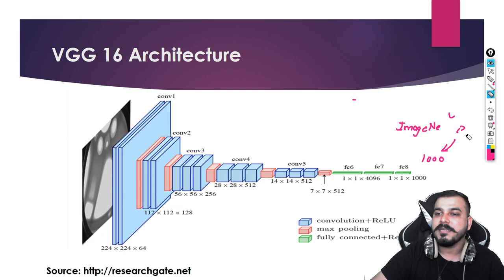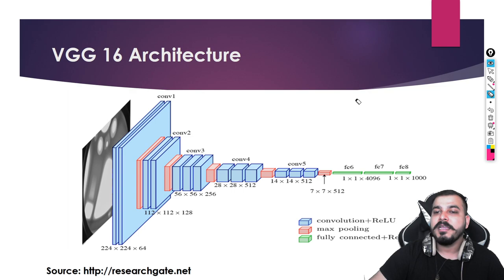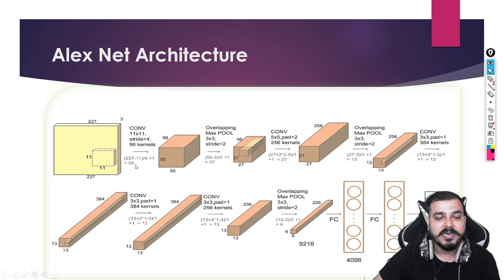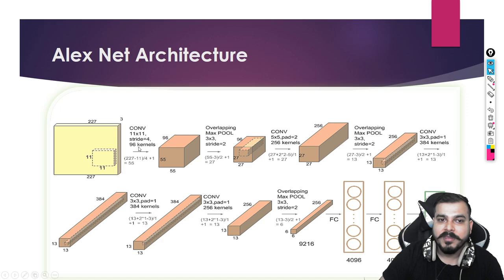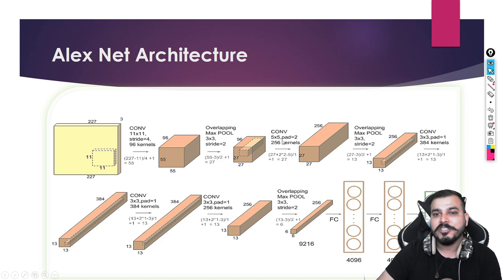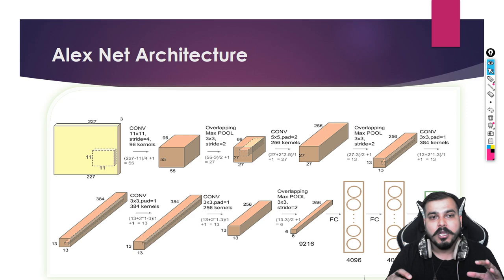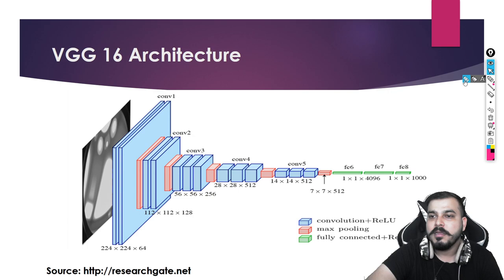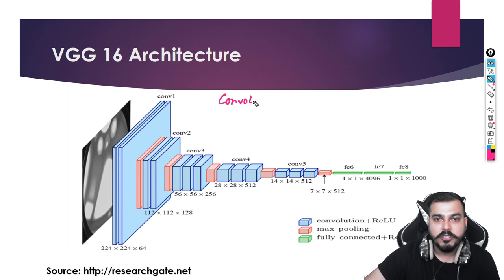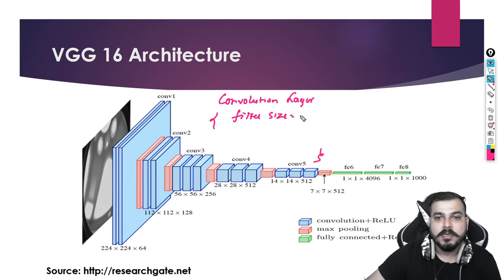The main problems in AlexNet are that it uses varying filter sizes: 227×227×3 input, convolution filter size 11×11 with stride 4, then 96 kernels, then max pooling with 3×3, then again 5×5 convolution — a lot of variations that are very difficult to remember and understand. To overcome this, they came up with VGG16. In VGG16 it is very simple: all convolution layers use a filter size of 3×3.